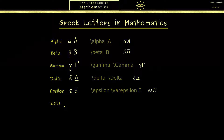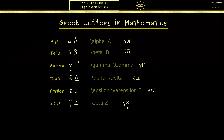Next we have zeta. We only use the lowercase one, which I draw like this, because the capital one is just a Z. The command backslash zeta gives us this very nice symbol here.